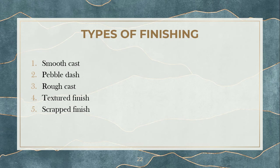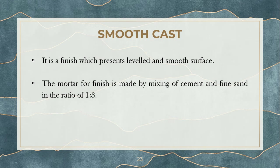Now let's see the types of finishing. Once you plaster a surface, how can you finish it? How can you make the finishing coat look? The options are: smooth cast, pebble dash, rough cast, scraped finish, and textured finish. The first one is smooth cast — this is a kind of finishing which is perfectly leveled and perfectly smooth. You can use a mortar for this finish, applied at a proportion of around 1:3.